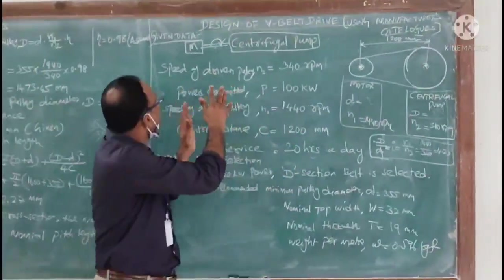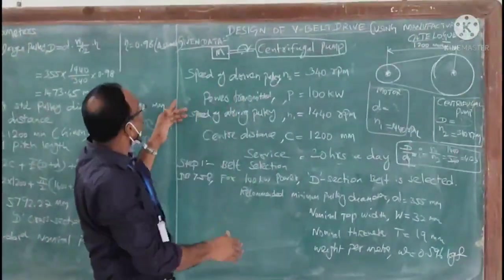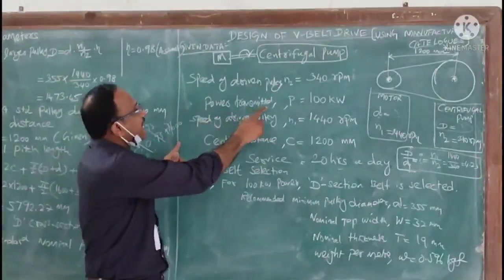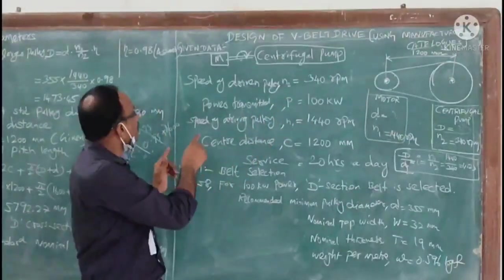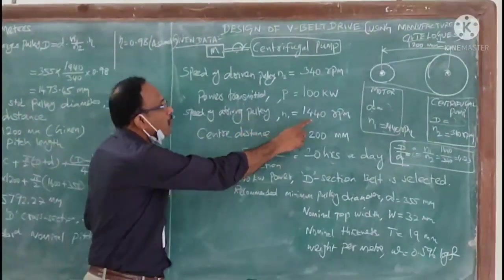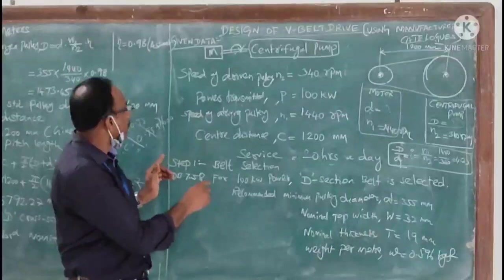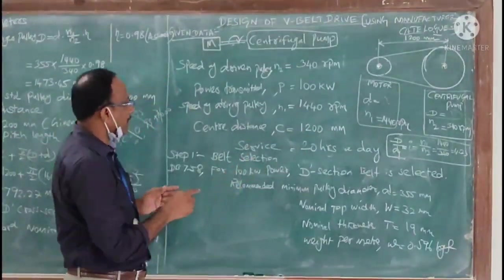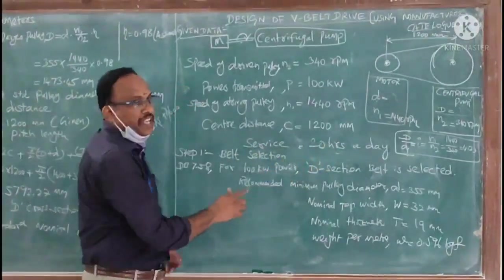Here we are going to write the given data: speed of driven pulley N2 is 340 RPM, power transmitted P is 100 kW, speed of driving pulley N1 is 1440 RPM, and the center distance C is given as 1200 millimeter, and service is 20 hours a day.